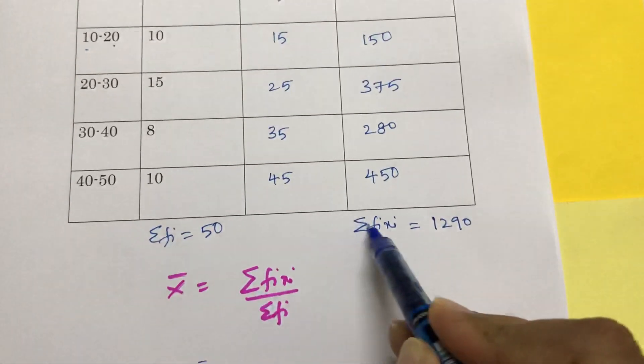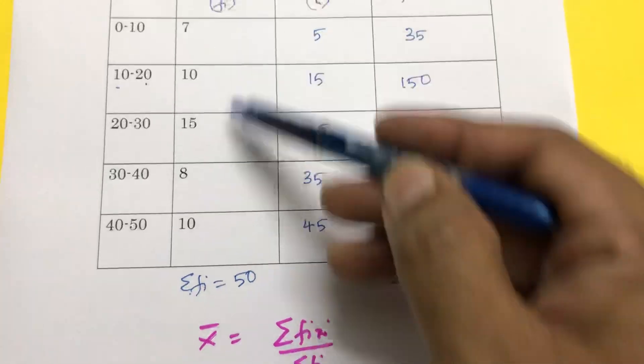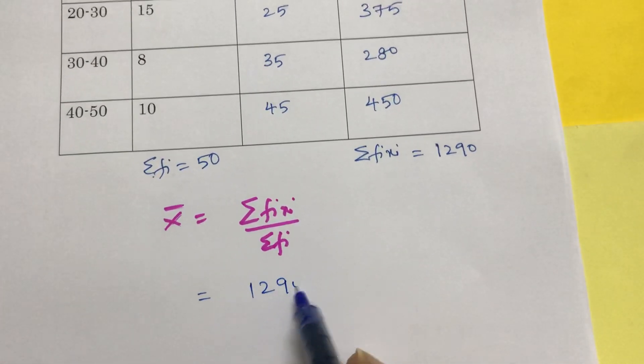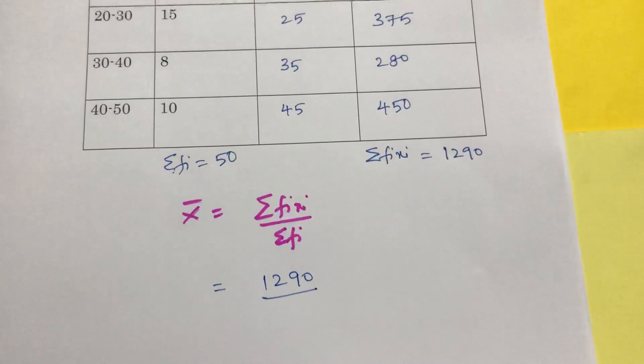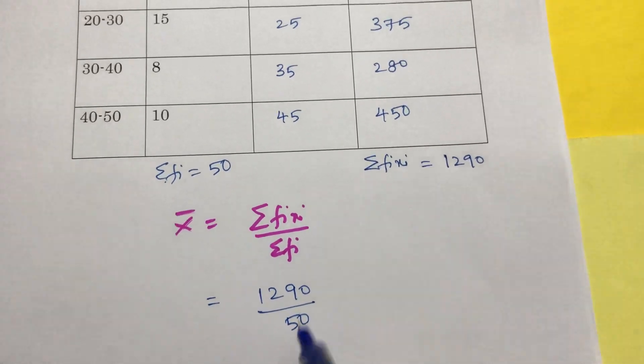Now sigma is nothing but sum of all fi xi values. Total frequency is 50. So this value is 1290 by 50.